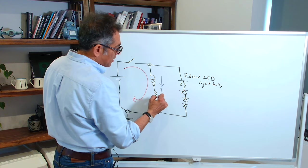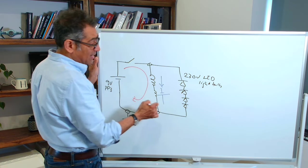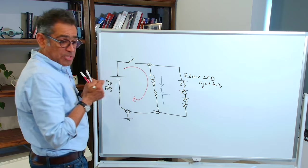So the back EMF will appear across the inductor which looks like this. Now imagine that this part is gone out of the picture.